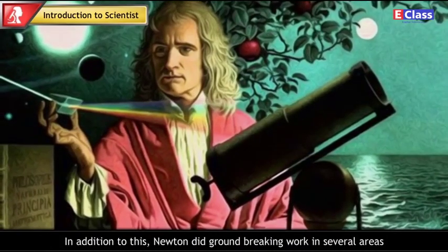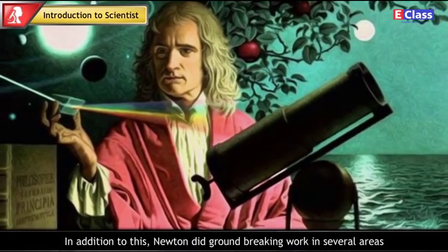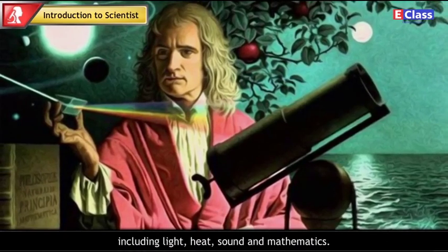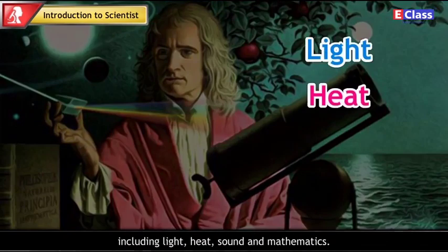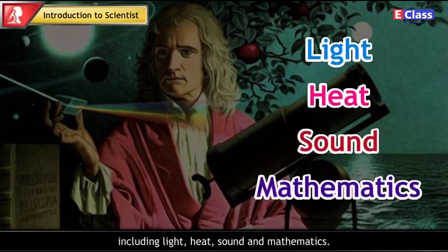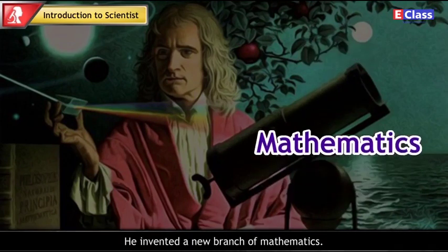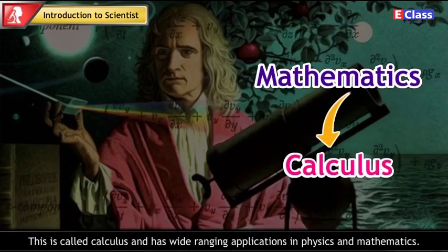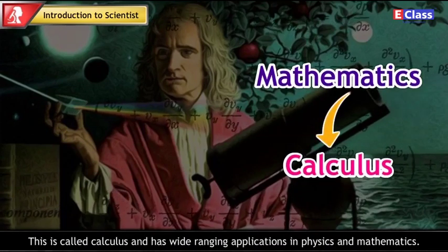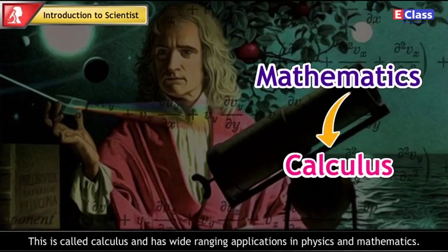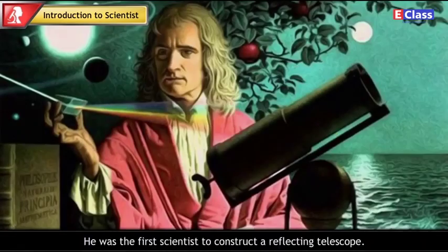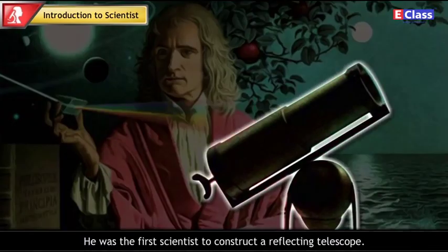In addition to this, Newton did ground-breaking work in several areas including light, heat, sound and mathematics. He invented a new branch of mathematics. This is called calculus and has wide-ranging applications in physics and mathematics. He was the first scientist to construct a reflecting telescope.